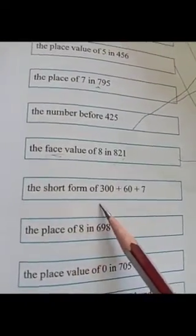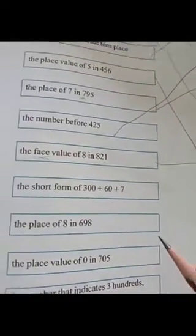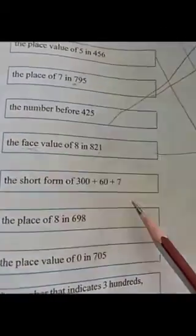The short form of three hundred plus sixty plus seven. Short form — three hundred and sixty-seven. We are having three hundred and sixty-seven here. Match it.